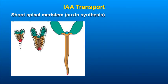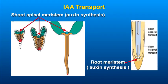Auxins show polar transport along the apical-basal axis of the plant. In early embryogenesis, synthesis of IAA takes place in the shoot apical meristem region and it is transported basipetally to the basal part of the embryo, which later organizes into the root apical meristem. Once the root apical meristem is formed, IAA synthesis occurs in this region and IAA is transported upwards in the acropetal direction. Transport of IAA takes place through vascular parenchyma cells, cortical parenchyma cells, and even through phloem sieve elements. IAA conjugates are mainly transported over long distances through phloem.